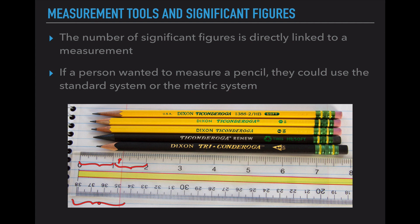We can say that we have 37.15 centimeters of measurement. We know the 37 is accurate, we know that the 0.1 is accurate, but if it's in between those two lines we are estimating that 0.05 value.